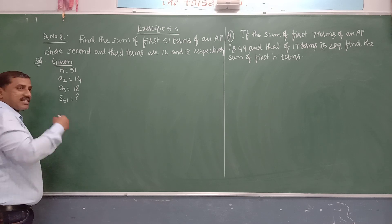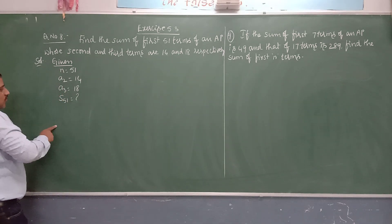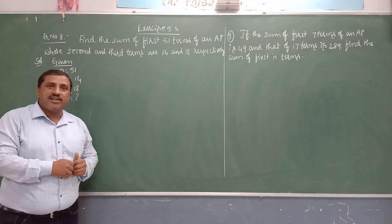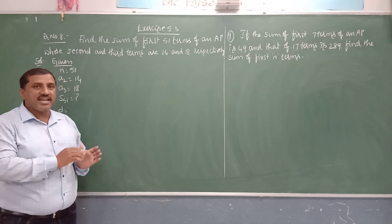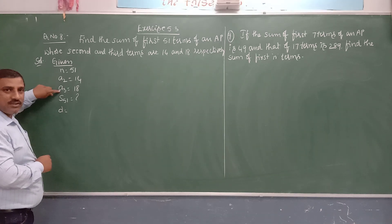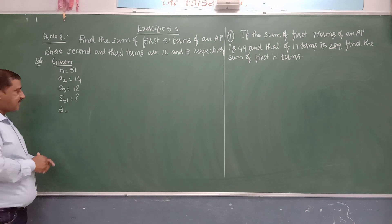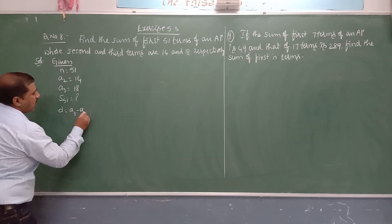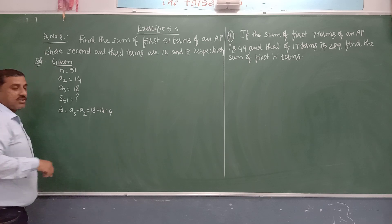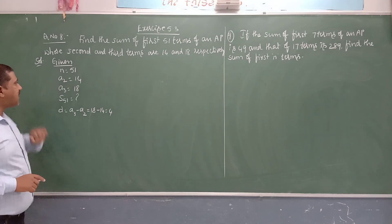To find d: since a2 and a3 are consecutive terms, the common difference d = a3 − a2 = 18 − 14 = 4. Now d = 4. To find a, we use a2 = a + d, so 14 = a + 4, which gives a = 10.